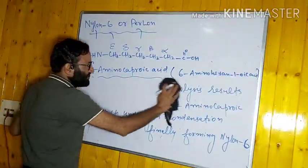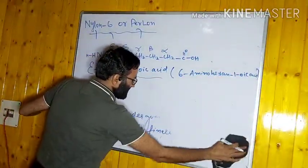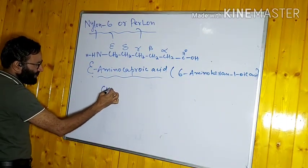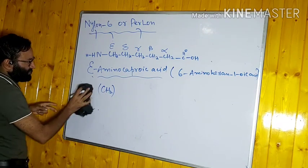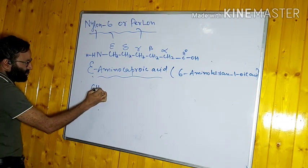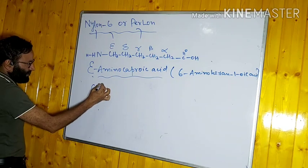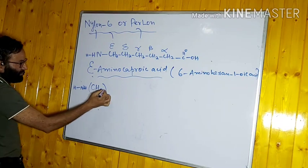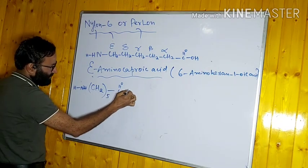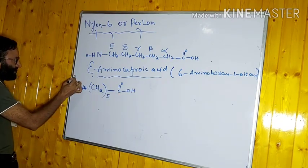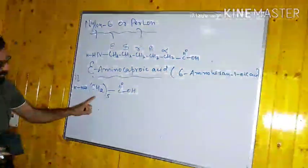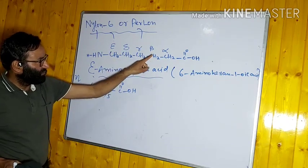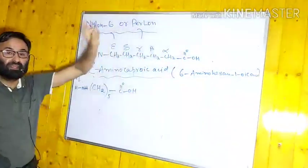We can write the condensation polymerization reaction as: n[NH₂–(CH₂)₅–COOH] → [–NH–(CH₂)₅–C=O–]ₙ + (n−1)H₂O. The monomer contains 6 carbon atoms — counted as 1, 2, 3, 4, 5, and 6 — hence it is called nylon 6. This is the structure of nylon 6, which is a homopolymer.